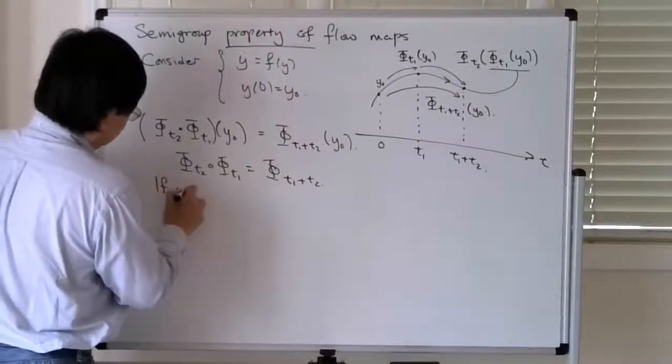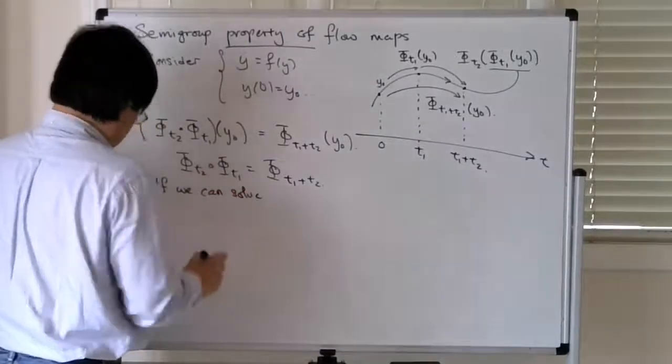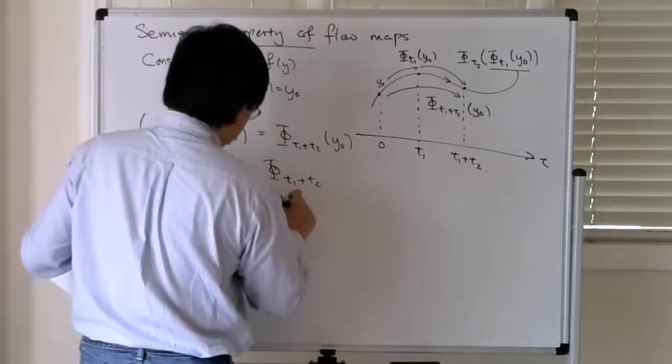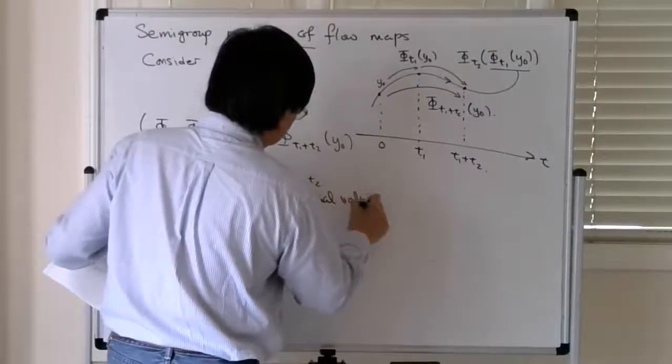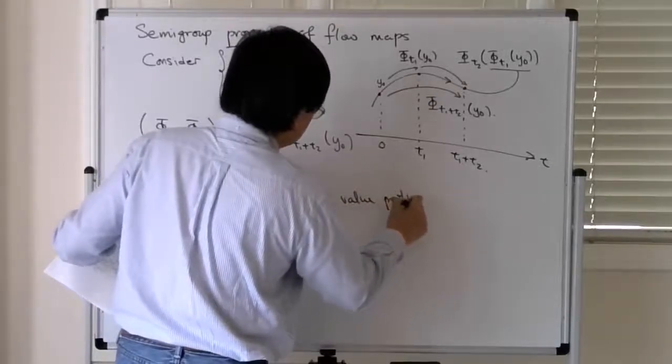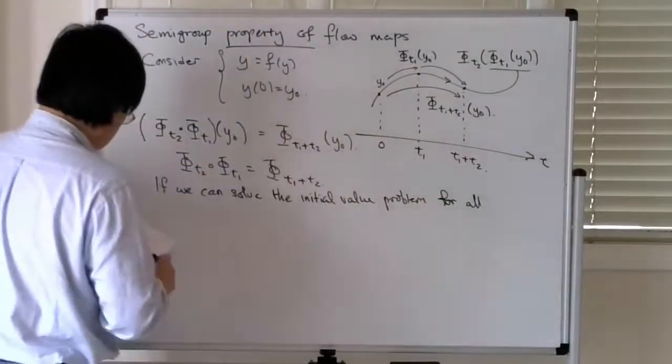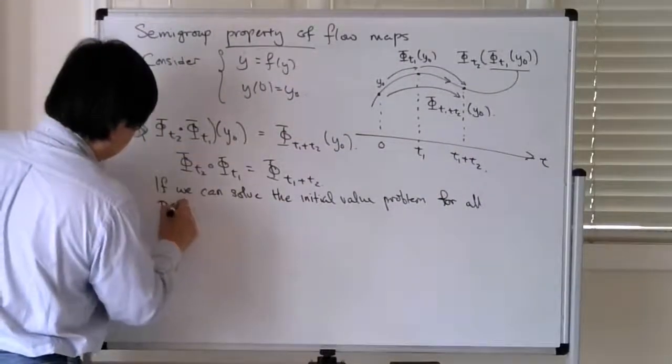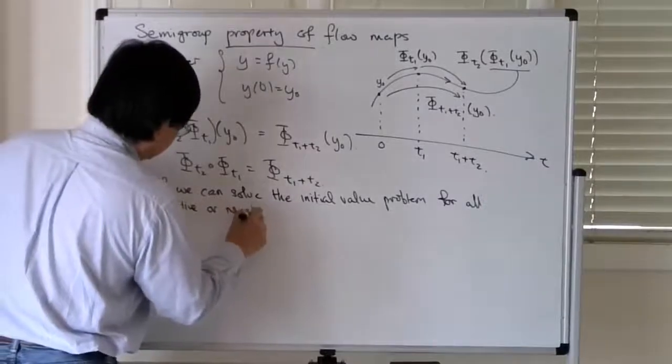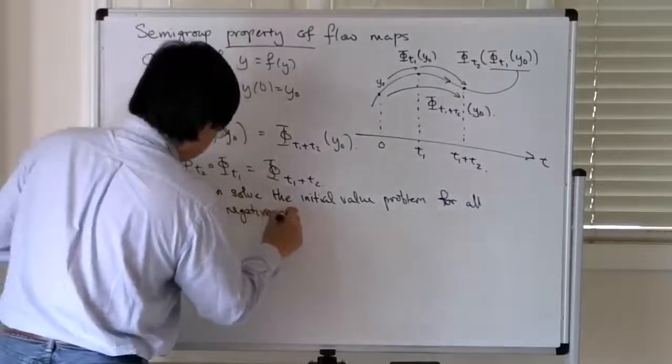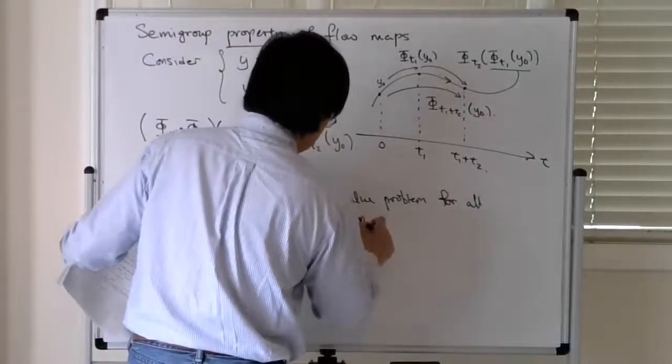So if we can solve the initial value problem for all positive or negative times, then you have the following property.